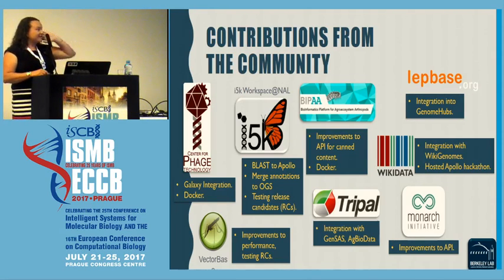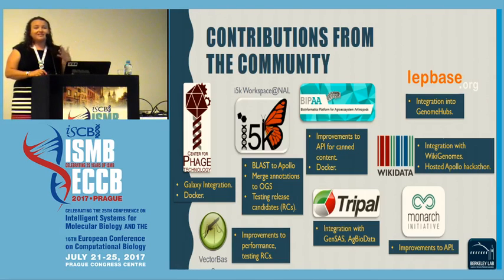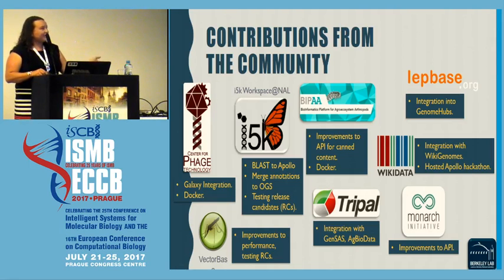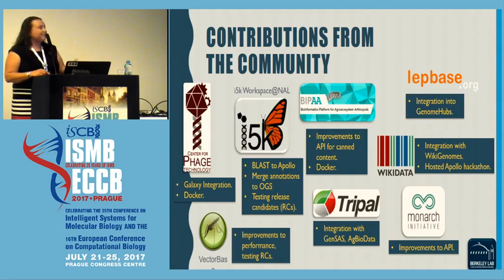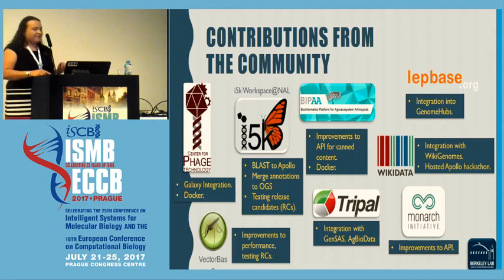Our collaborator at the Center for Phage Technology at TAMU, Eric Rash, was the person in charge of creating the Docker images and eventually the Galaxy integration for us. Many of these collaborators have brought a lot to the table and helped us improve workflows and the tool for our community. The Wikidata team and Wikigenomes helped us as well — integrated into Wikigenomes and hosted one of our hackathons. There have also been improvements to the API by the Monarch Initiative and a few other collaborators.